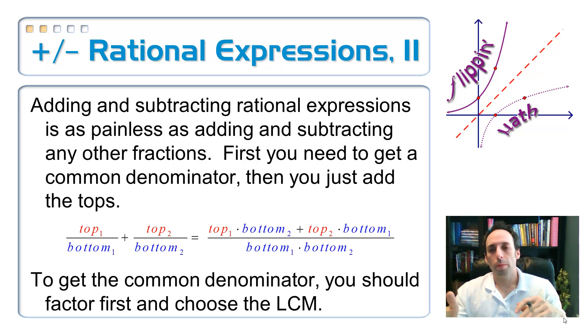Adding and subtracting rational expressions, just as painless or painful, depending on your perspective, as adding and subtracting any other fractions. One way to add fractions is to multiply the bottom straight across. That would be a common denominator, but it may not be the least common denominator. Once you do get the common denominator, you just add the tops together. To get that least common denominator, you're going to factor both of the bottoms, and then find the highest power of each of the factors and multiply them all together. That's going to be the least common denominator.